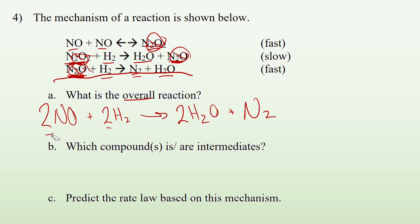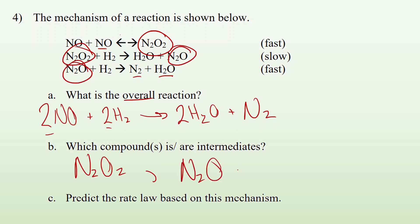Which compounds is or are the intermediates? Well, we said that N2O2, let me clean this up. N2O2 is made in the first step and used up in that second step. So that is an intermediate. It's not in our final equation as well. N2O is made in the second step and used in the third step. So that's also an intermediate and it doesn't show up as a reactant or product. And I think those are our only intermediates.